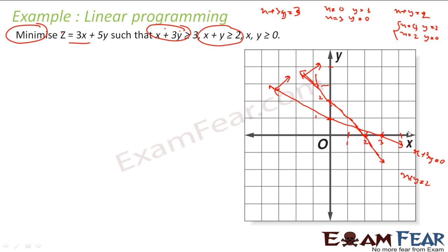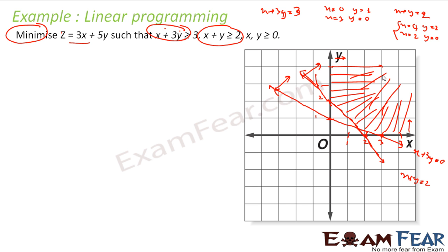Since x and y are both greater than 0, those are the positive axes regions. If you now find the common area satisfying all constraints, the common feasible region is this area here, because x greater than 0, y greater than 0, and both constraint inequalities are satisfied. Note that this region is unbounded, so in this case a solution may exist or may not exist.